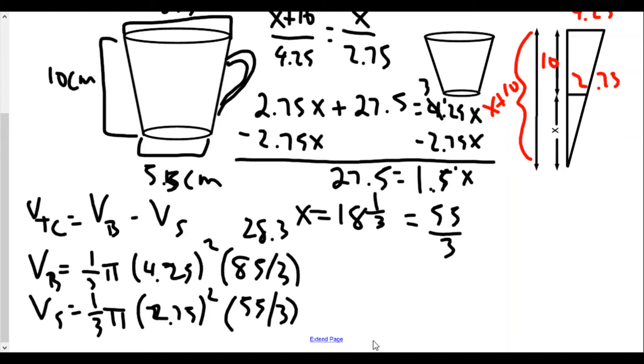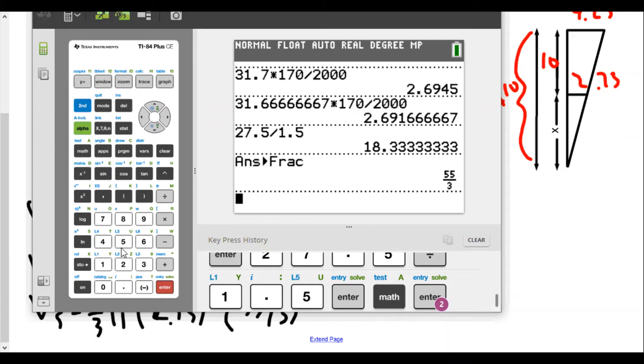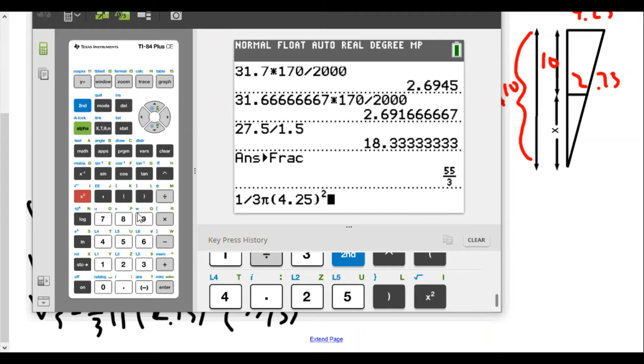Let's enter the calculator. I have 1 divided by 3, pi, our radius was 4.25, so 4.25. We're going to square that and then multiply by the height - 85 over 3.